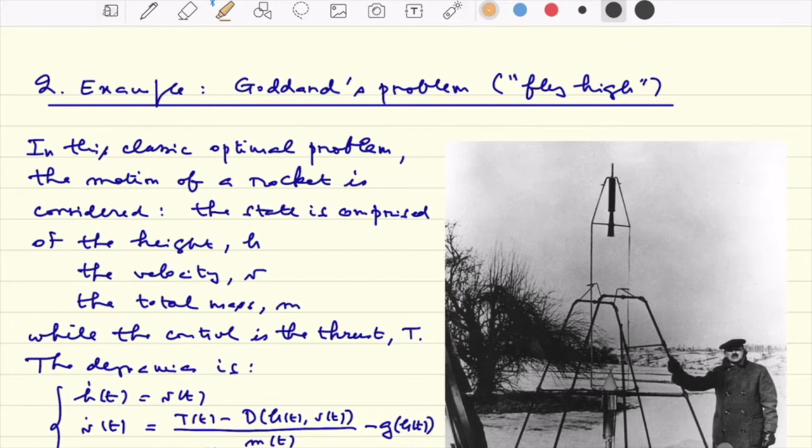So the state is comprised of three values: the height h, velocity v, and the total mass m. The idea is that the mass is being changed during the time, because the rocket in fact consumes some fuel, so the mass is diminished.